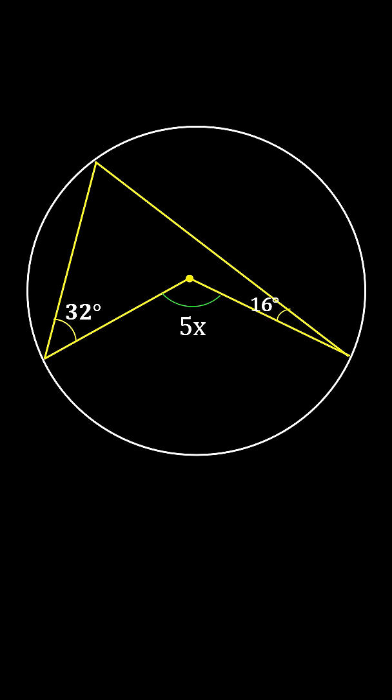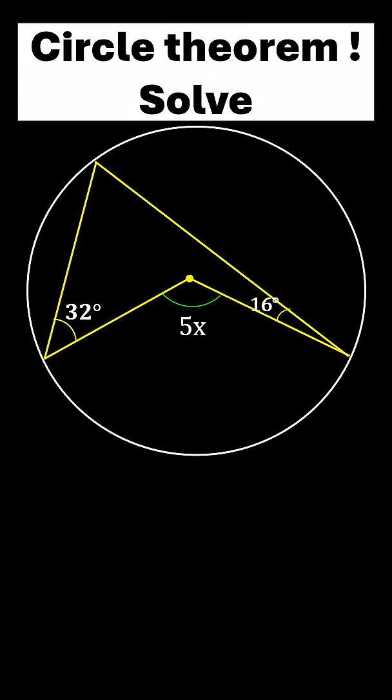So this is how you solve for x. First, we can identify that this is a circle theorem problem. The angle at center is twice the angle at the circumference, so therefore this angle here at the circumference is 5x divided by 2.